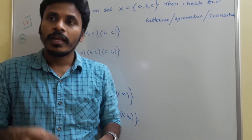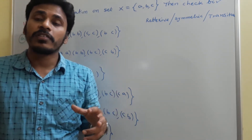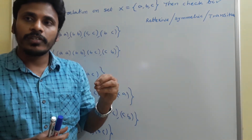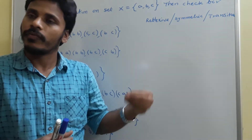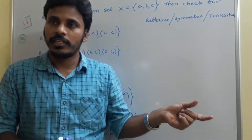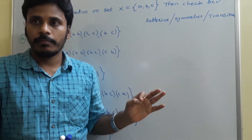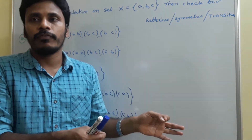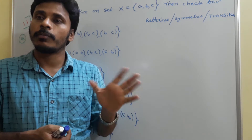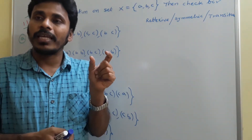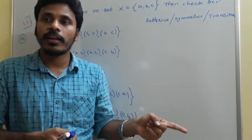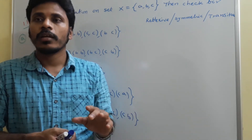As I mentioned, the reflexive property — the name itself suggests there must be a reflection. Every element of the set is connected to itself: x connects to x, y connects to y, z connects to z. For every element of the given set, if the element is connected to itself, the relation is reflexive. For symmetric, if there is an ordered pair (x, y) in the relation, we check for (y, x). If it is there, it is symmetric; otherwise, not symmetric.